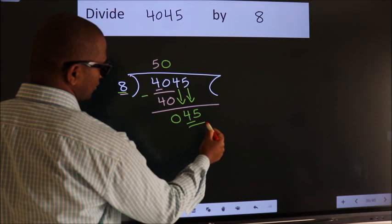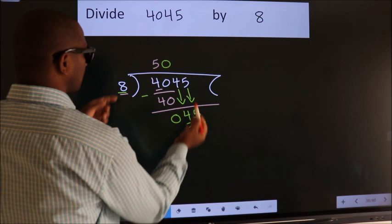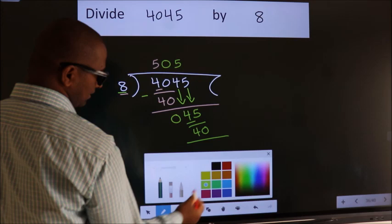A number close to 45 in 8 table is 8 fives 40. Now we subtract. We get 5.